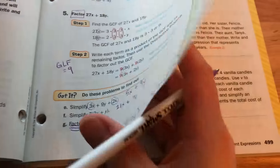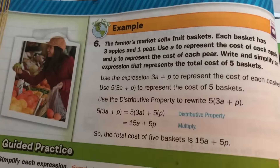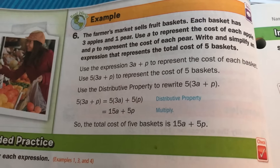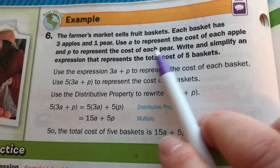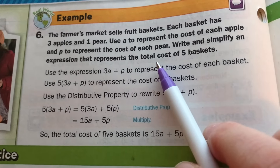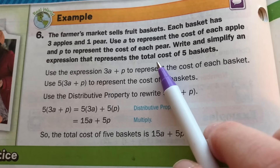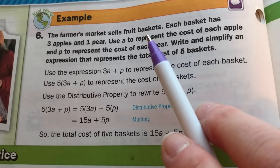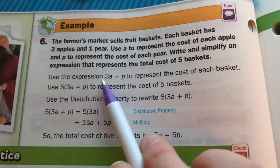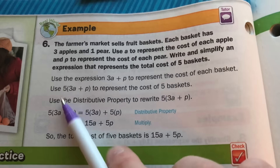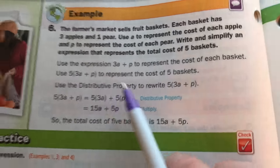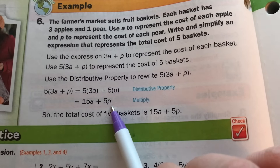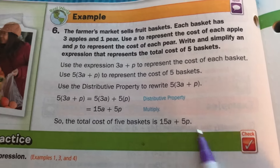Last example on page 498, Example 6: The farmer's market sells fruit baskets, each with 3 apples and 1 pear. Use A for the cost of each apple and P for each pear. Write and simplify an expression for the total cost of 5 baskets. One basket is 3A + P, so 5 baskets is 5(3A + P). Using the distributive property: 5 × 3A = 15A, 5 × P = 5P. Total cost: 15A + 5P.